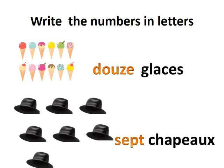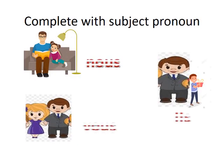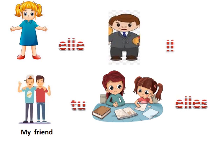Next, how many hats? Hat is called 'chapeau'. Counting: 1, 2, 3, 4, 5, 6, 7 — so in French we write 'sept chapeaux'. Now complete the subject pronouns exercise. Father and daughter sitting together — that is 'nous'. Father and mother — 'vous'. Father and child, but it is a boy — 'ils'. For a girl you write 'elles'. My friend — 'tu'. One father alone — 'il'. Here two girls, mother and daughter — 'elles'.